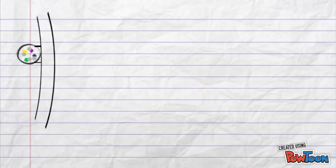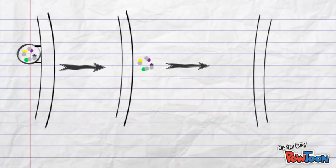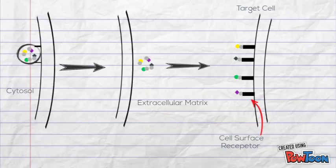Proteins and cargo that are exported out of the cell are transported to the target cell. The target cell has receptors on the plasma membrane surface to which the molecules bind and then via endocytosis enter into the target cell. And so the cycle starts again.